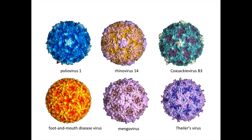Here are computer-generated models of six different picornaviruses: poliovirus, rhinovirus, coxsackievirus - those are all enteroviruses - foot-and-mouth disease virus, an aphthovirus, and mengovirus and thelovirus, which are cardioviruses. Polio and rhino have a plateau at the five-fold axis, as does coxsackievirus, with a very pronounced valley around that five-fold axis. In foot-and-mouth, mengo, and thelus, the five-fold axis is actually depressed with respect to the rest of the virion, and there's no canyon or valley surrounding it.